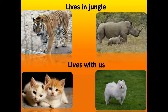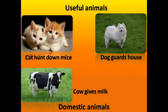We know that tiger, lion, deer, rhino, etc. live in the jungle — they can't live on a farm with us. Many animals like cow, dog, cat, etc. can live with us. Animals which live with us are called domestic animals. Domestic animals are very useful: dogs guard our house, cats help us get rid of rats.